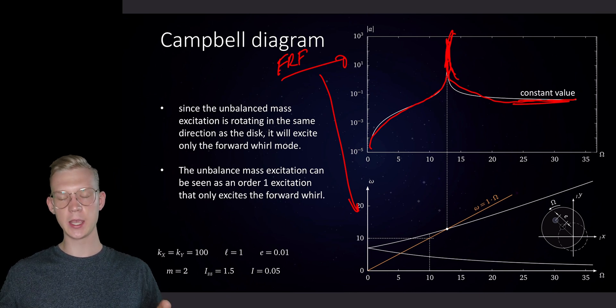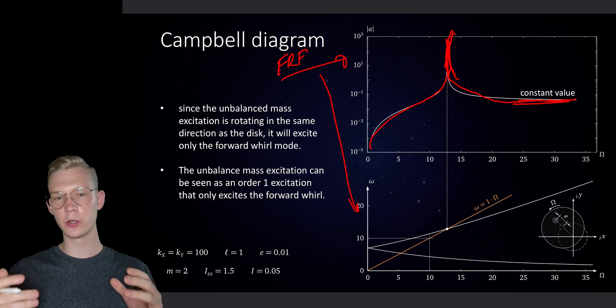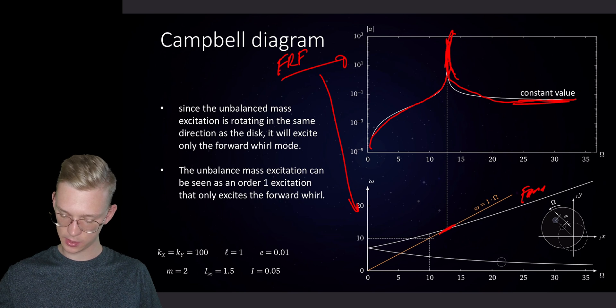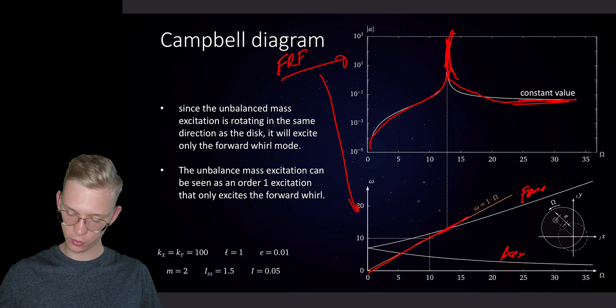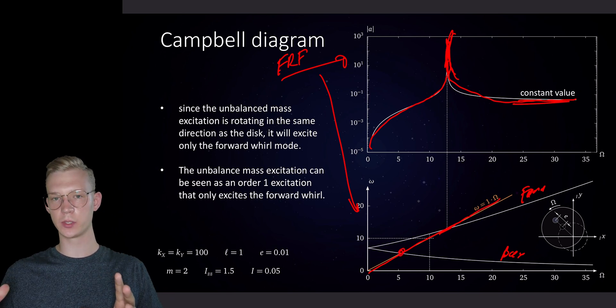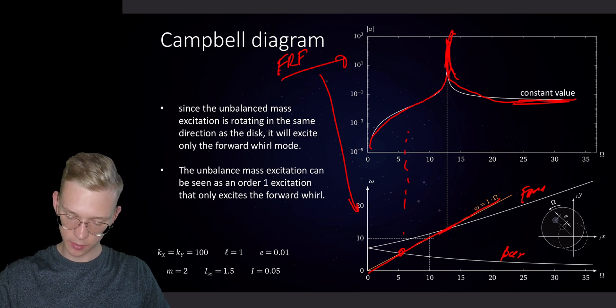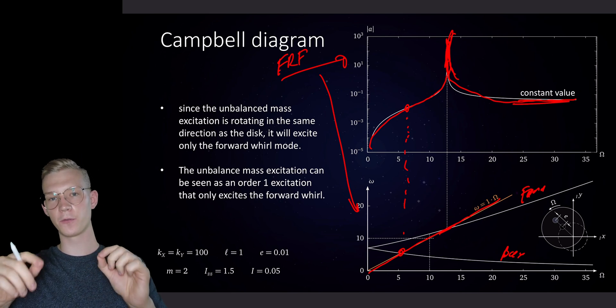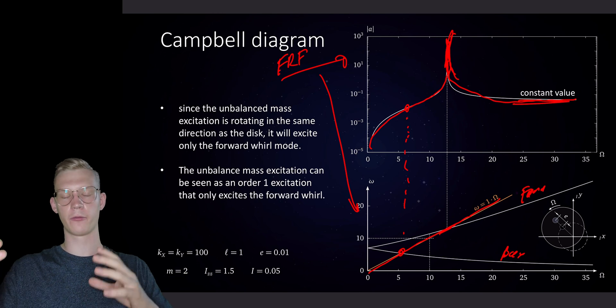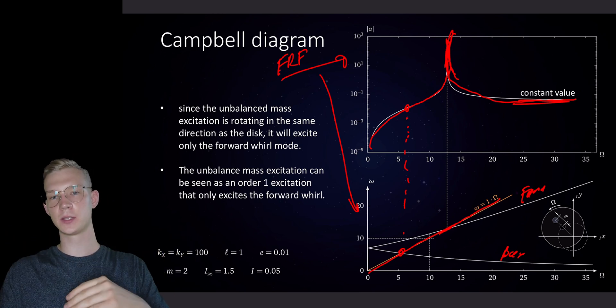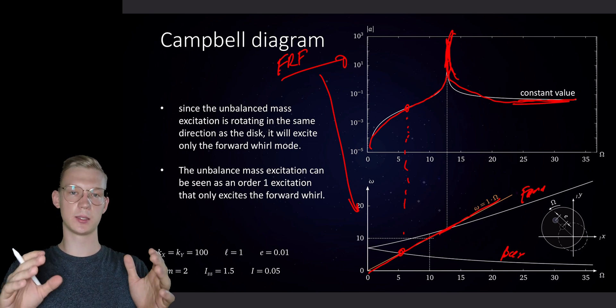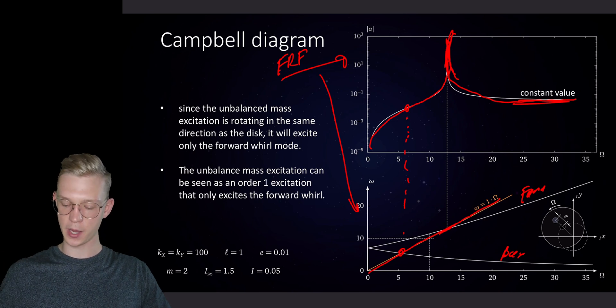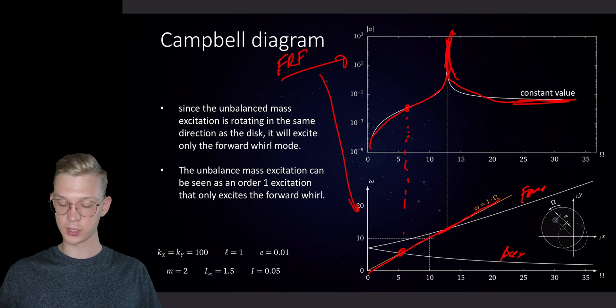The interesting part is even though we're having an unbalanced mass we're not actually tickling the backwards whirl, so we're only hitting the forward whirl. Even though we're running through the first eigenfrequency, we will not fall into resonance at the backwards whirl. This is because the eccentricity is only exciting the first eigenfrequency and the force of the rotating mass is orthogonal to the eigenvector of the second eigenfrequency. This is why we have spatial convergence where the force of our unbalanced mass is not exciting the eigenfrequency of the backwards whirl.